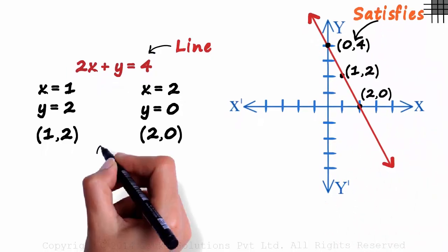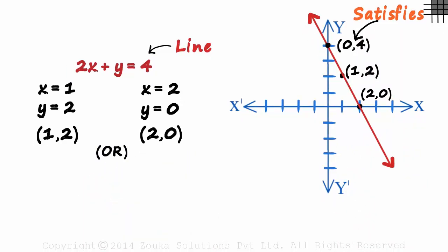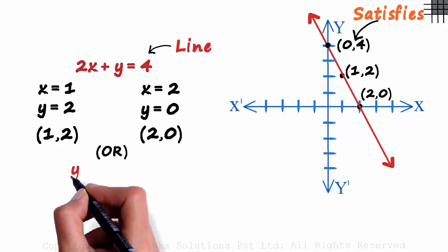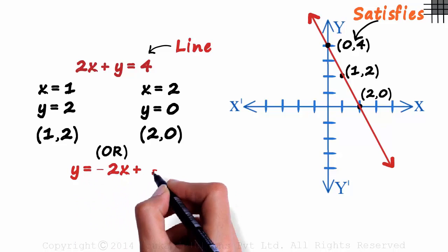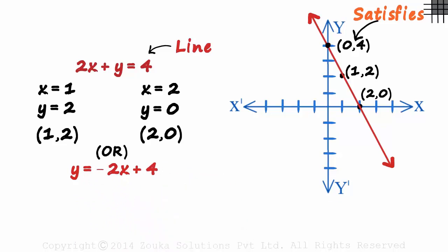There is an interesting way to write this equation. We can transpose 2x to the other side and write it as y is equal to minus 2x plus 4. But how does it make a difference? Why write it this way?